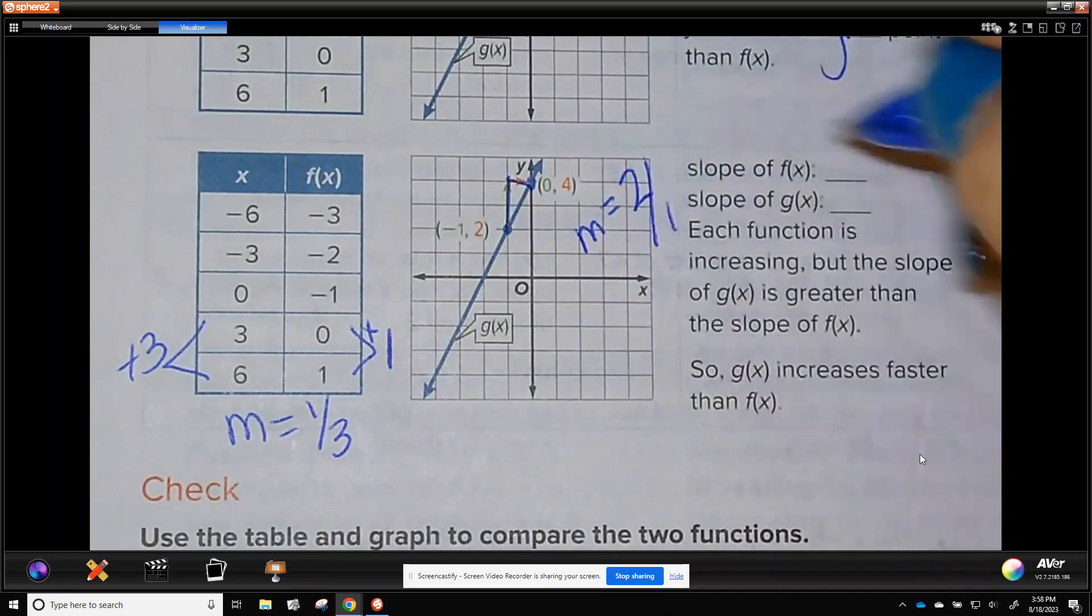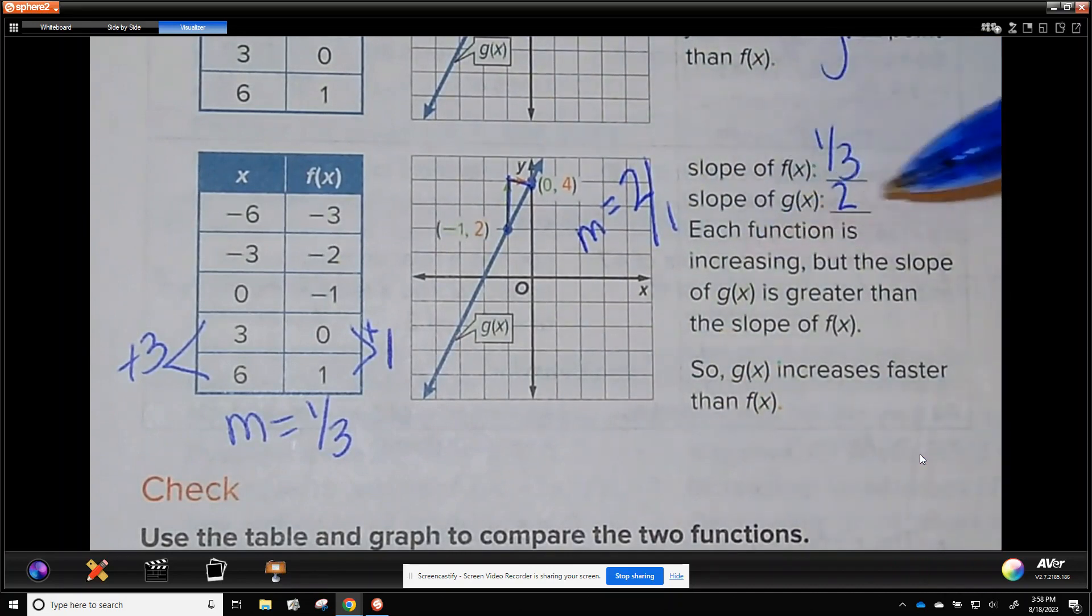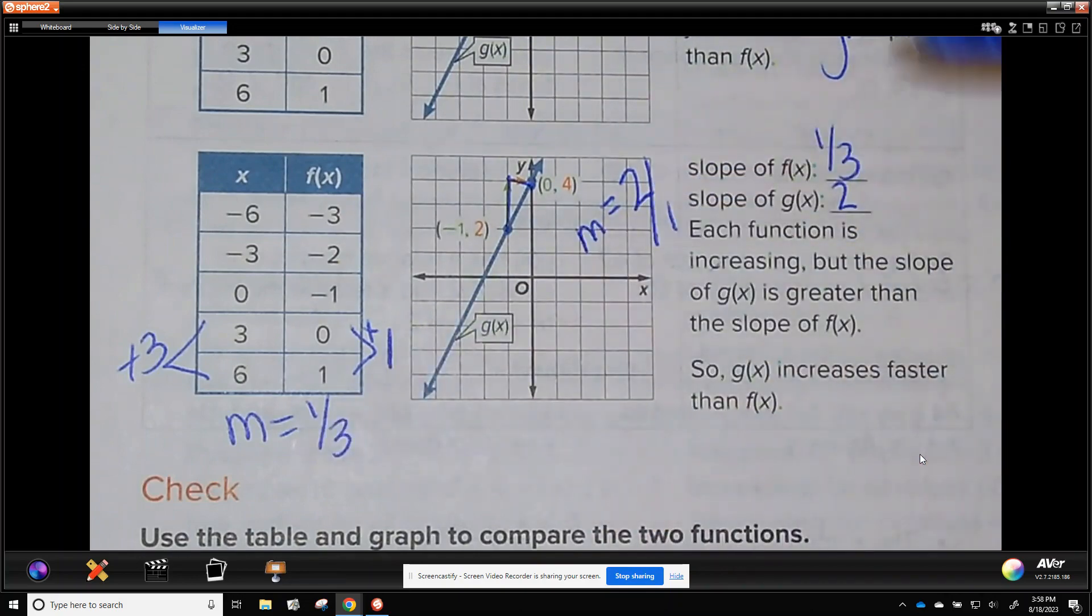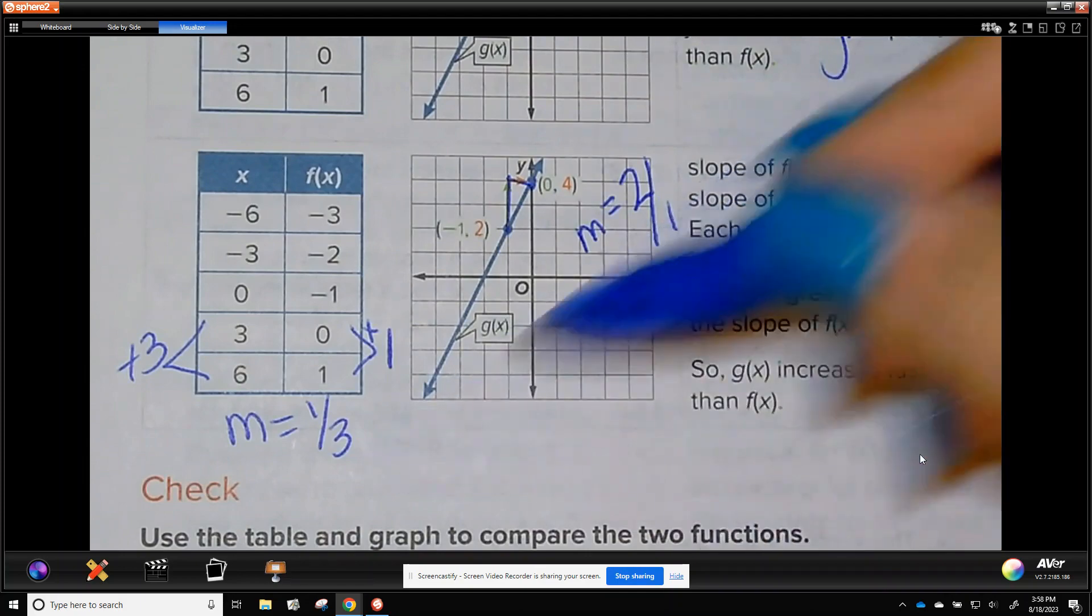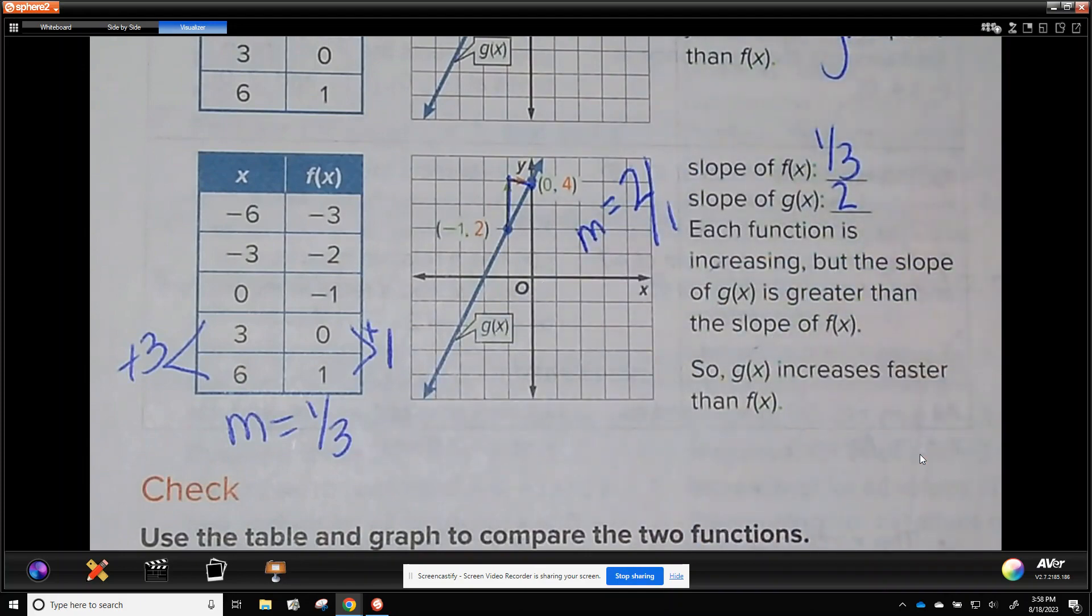2 and 1 3rd. Increasing. Each function is increasing because they're both positive slopes. But the slope of g is greater than the slope of f, which is true. So g increases faster than f.